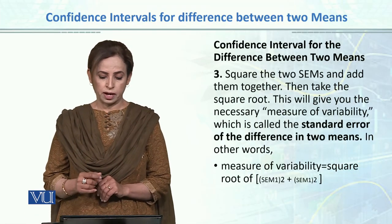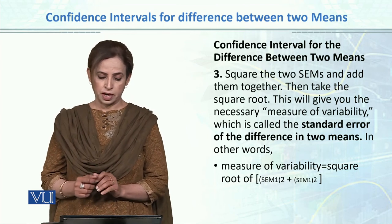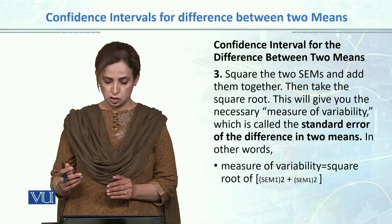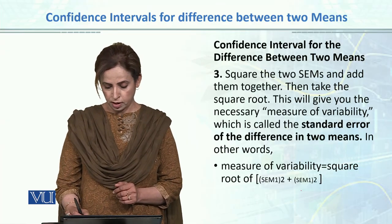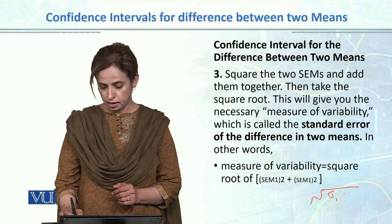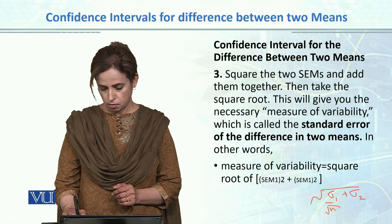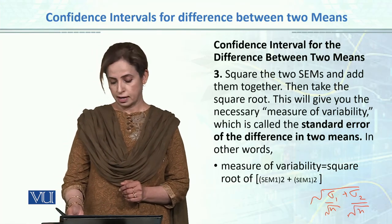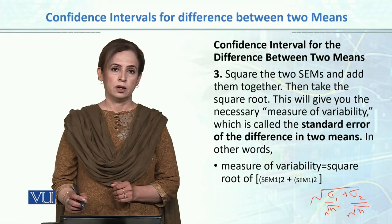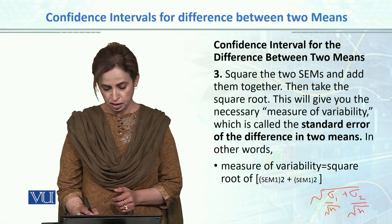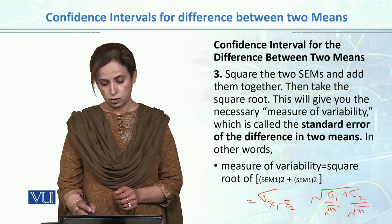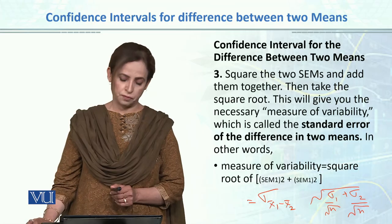The third step is to square the two standard errors, add them together, and then take the square root. So your standard error when you have a difference between two means is: square root of (SE1² + SE2²). This gives you the standard error of the mean difference — that is, the standard deviation of the sampling distribution of the difference between two means.